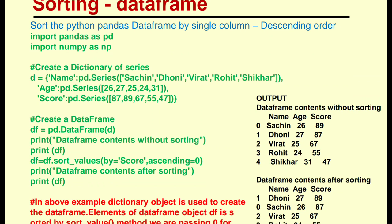The output is: DataFrame contents without sorting — columns are name, age, score with index 0, 1, 2, 3, 4. The name column shows names, the age column shows ages, and the score column shows scores.